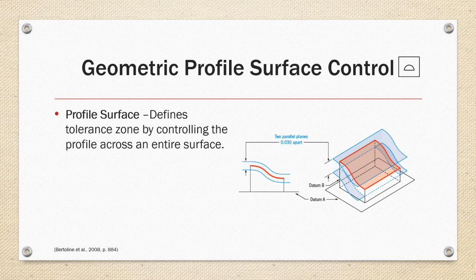Profile of a surface defines a tolerance zone by controlling the profile across the entire surface. So that same .03 zone extends across the entire face of the surface.